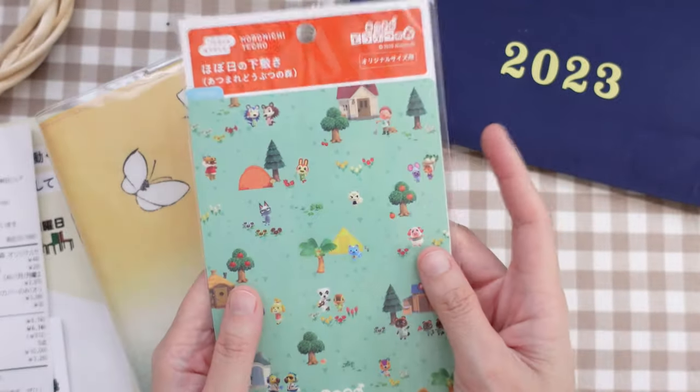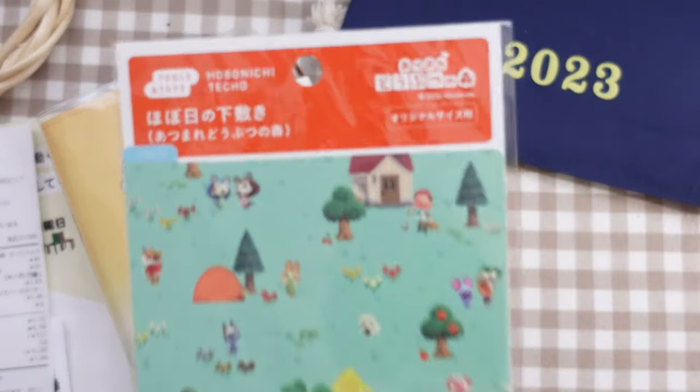What I really like about how it's designed is that you have two pen holders. It automatically locks your notebook in place, and I love that. That's very smart. So let's move on to the pencil board. I got the Animal Crossing design.